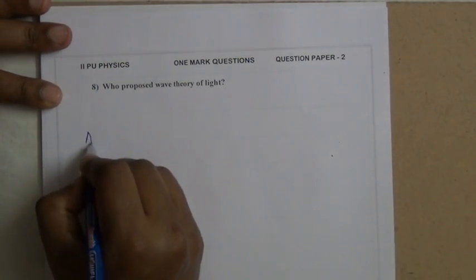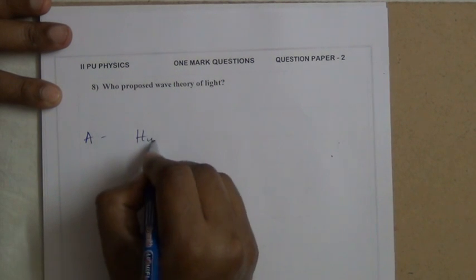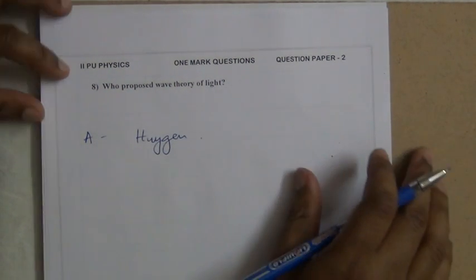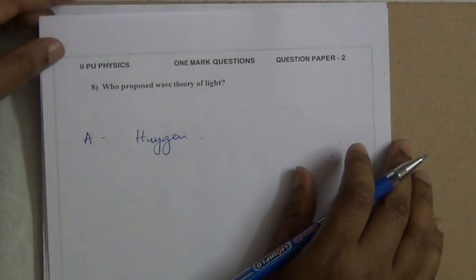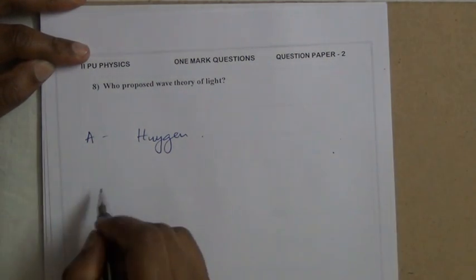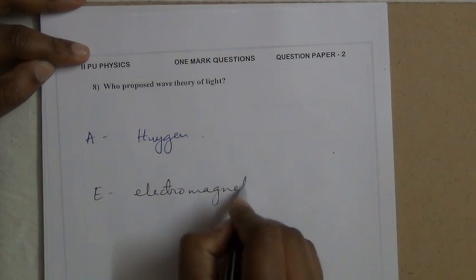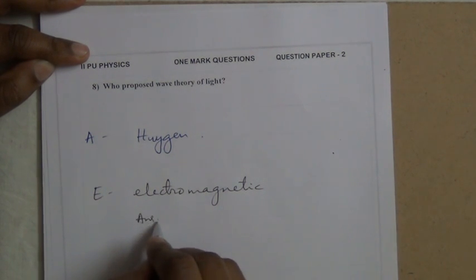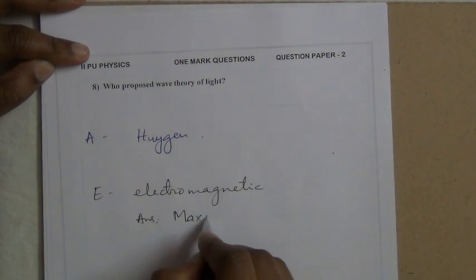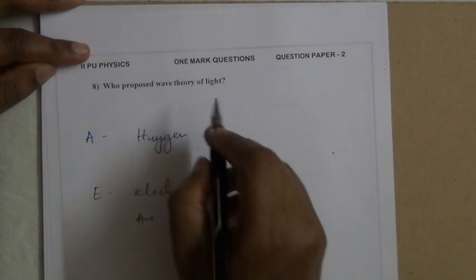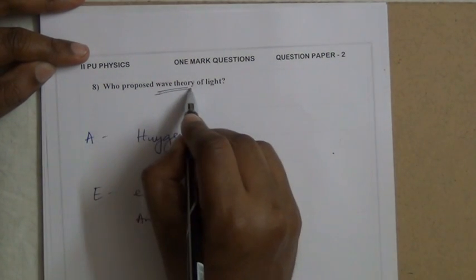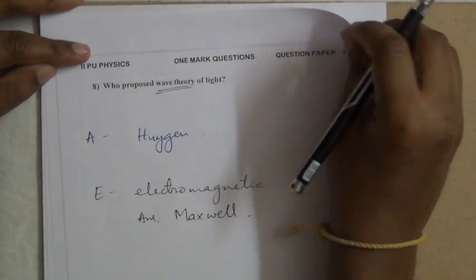Who proposed the wave theory? Huygens proposed the wave theory. If the question mentions electromagnetic theory, then the answer is Maxwell. Huygens' wave theory and Maxwell's electromagnetic theory are different.